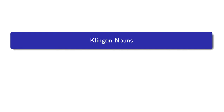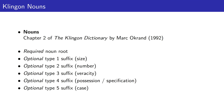In this lecture we will examine Klingon nouns. The content of this lecture is taken from chapter 2 covering nouns in the Klingon Dictionary by Mark Okrend, published in 1992. We will examine the template of how Klingon nouns are constructed from their component morphemes.